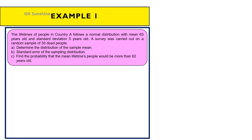Let's try the first example. The lifetimes of people in country A follow a normal distribution with mean 63 years and standard deviation 5 years. A survey was carried out on a random sample of 30 dead people. This is a sampling distribution problem because of the word 'sample' — in a plain normal distribution problem, there is no mention of a sample. Remember that.